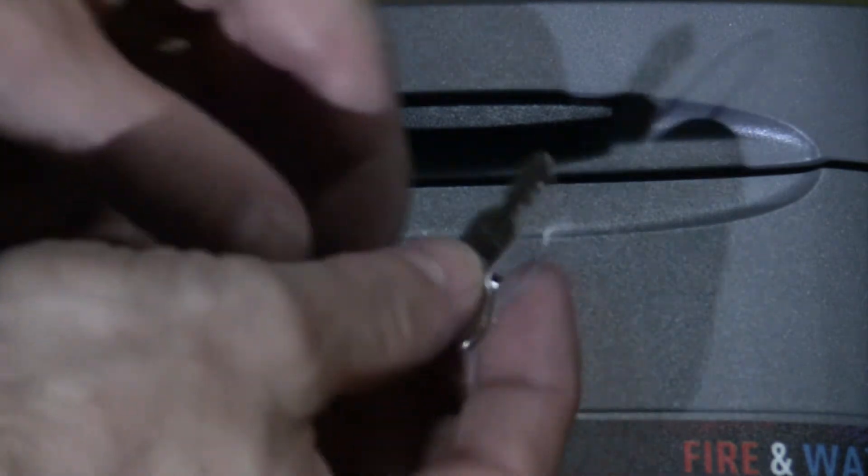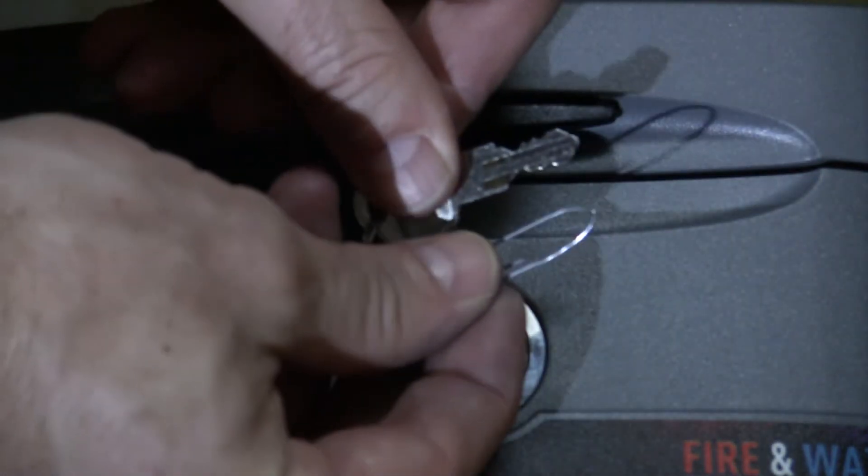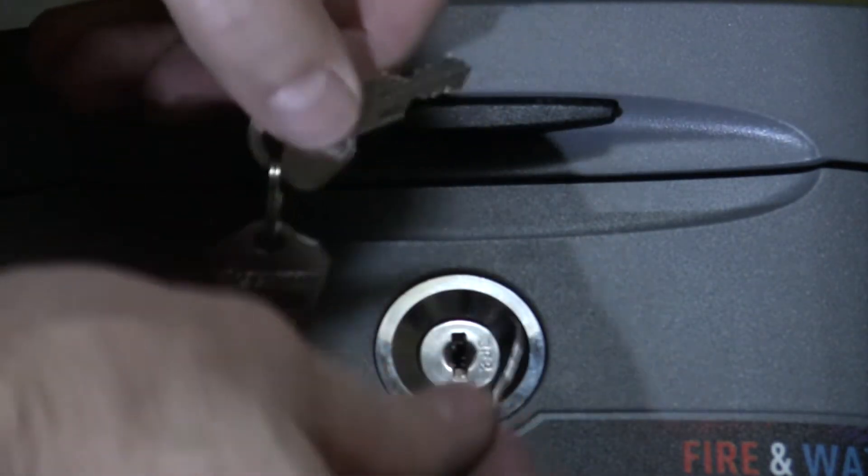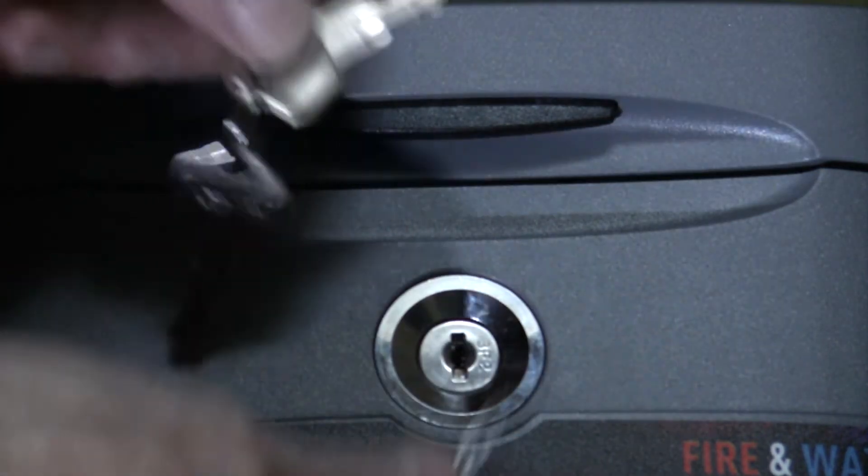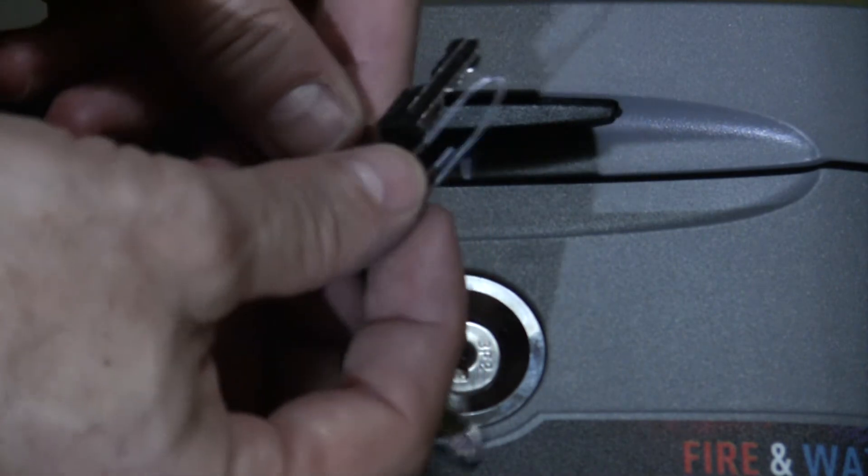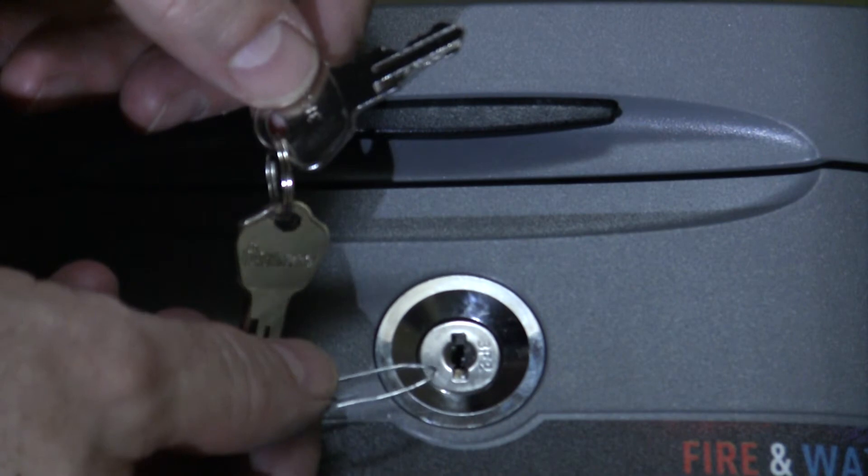and I'm using a paper clip that will approximate the width of a key blank for this same key. And what that will do as I insert it in the keyway is to force the wafers to their extreme position as if there were no cuts in this key and no bidding in this key. It would force the wafers to their extreme position in the plug.